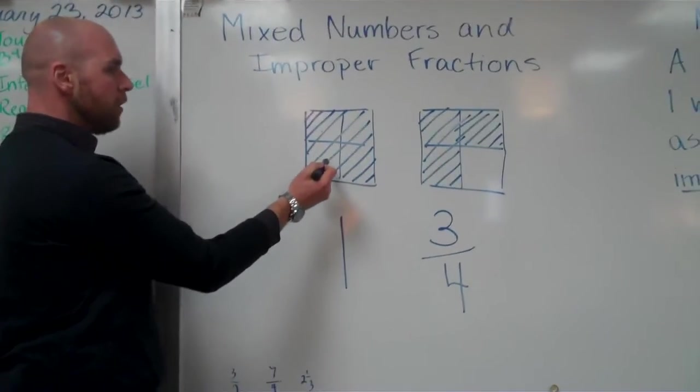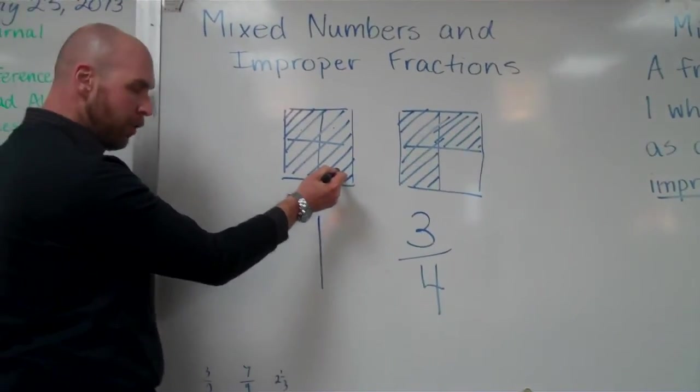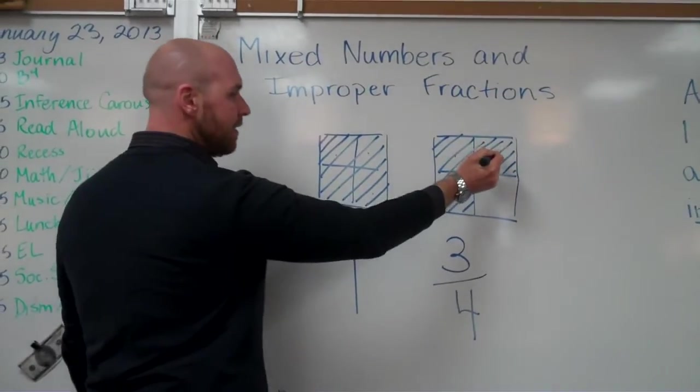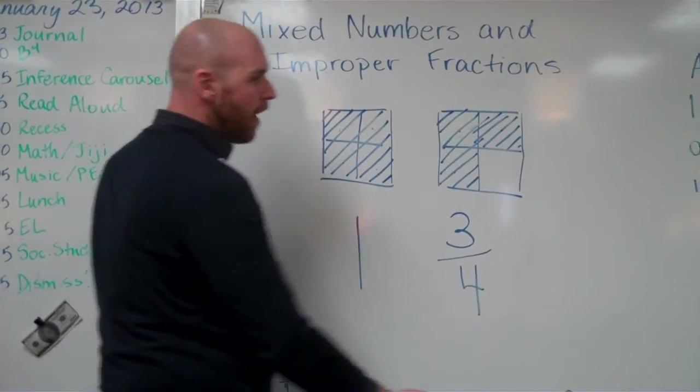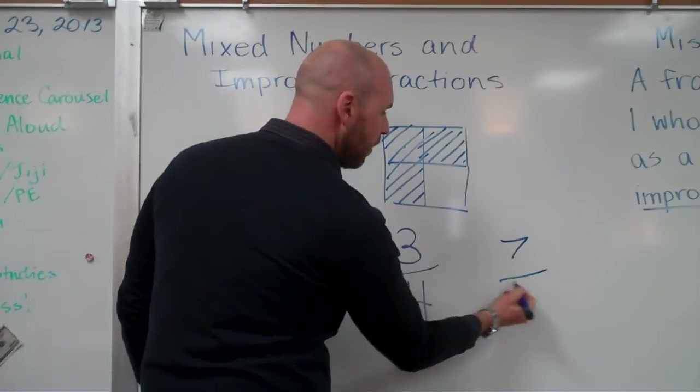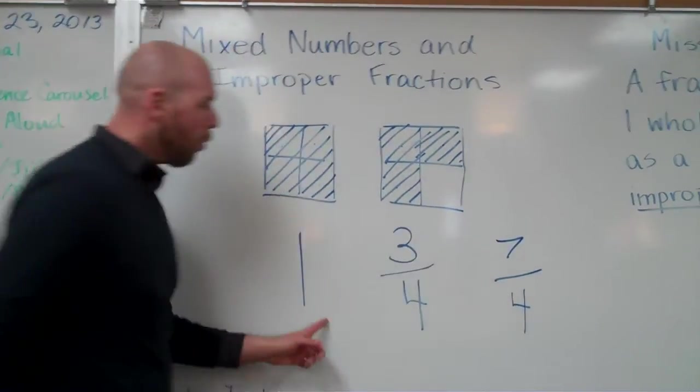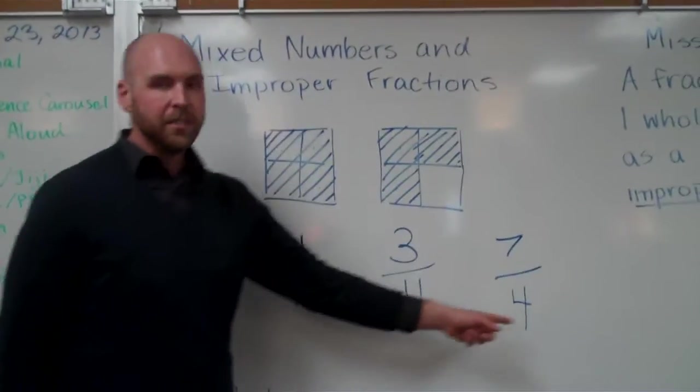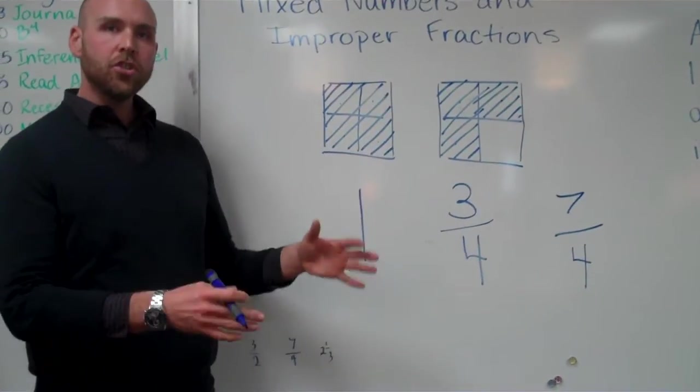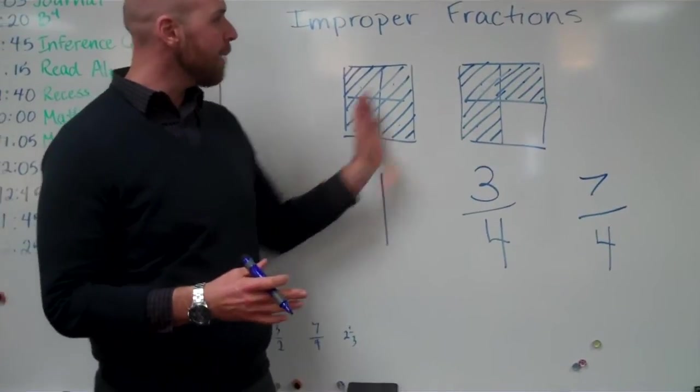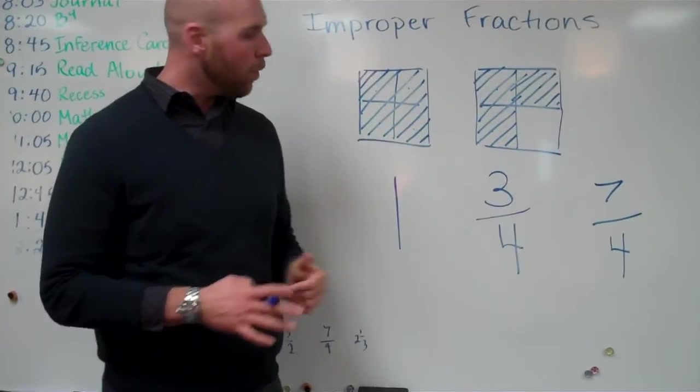But what if I wanted to make this an improper fraction? Well, I would count my fourths, one fourth, two fourths, three fourths, four fourths, five fourths, six and seven. So in an improper fraction, it would be seven fourths. One and three fourths equals seven fourths. It's just two ways of saying that a fraction can be greater than one whole.